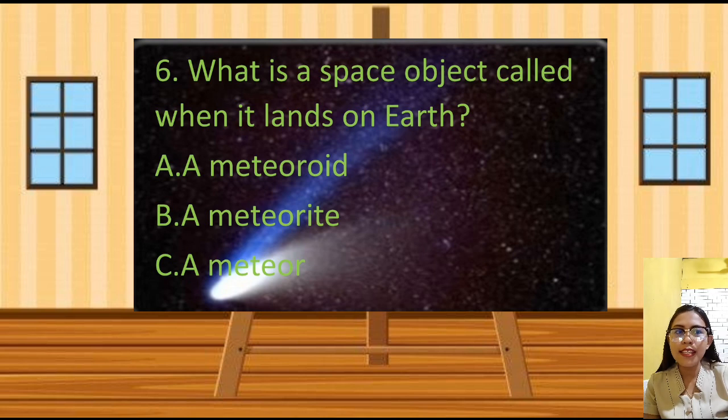Number 6. What is a space object called when it lands on Earth? Yes, the correct answer is letter B. A meteorite.